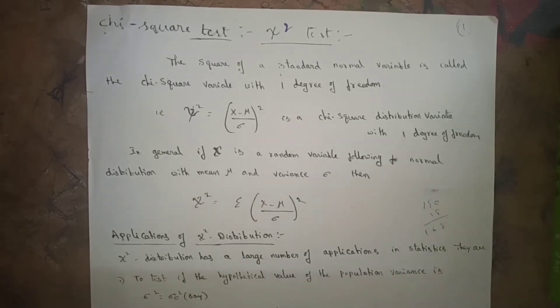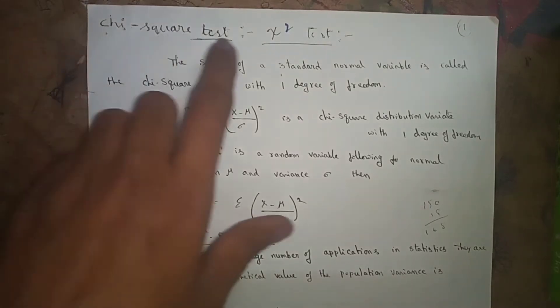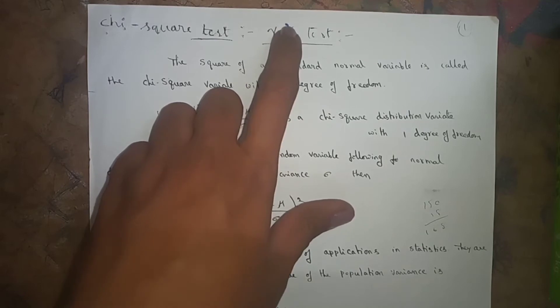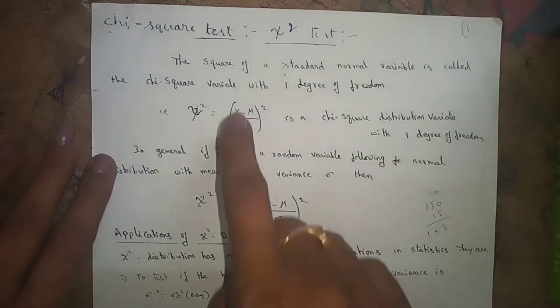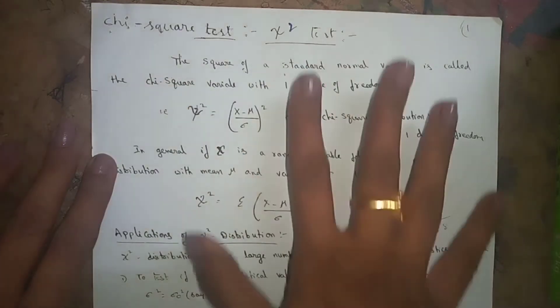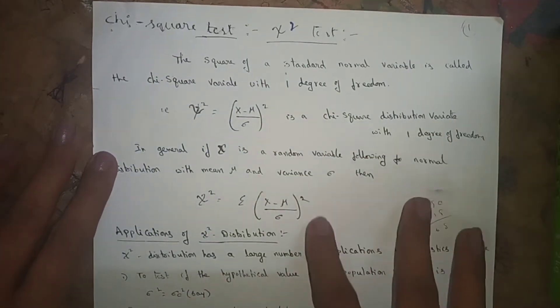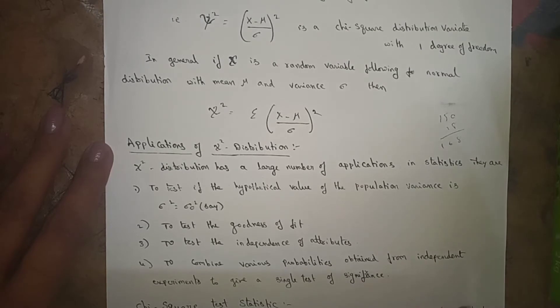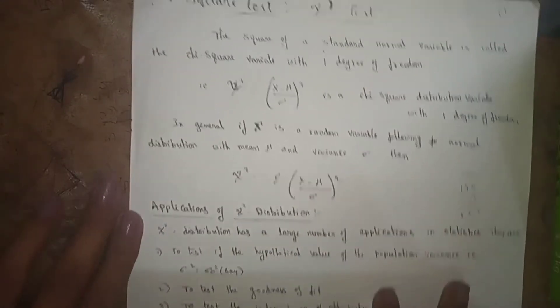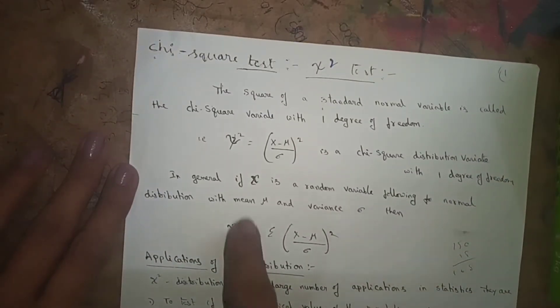Hello everyone, today I am going to explain the chi-square test. This is the symbol of the chi-square test. First I will explain the definition, and after that the applications, the test statistic formula, characteristics, conditions, and validity for chi-square test. After that, I will explain a problem.